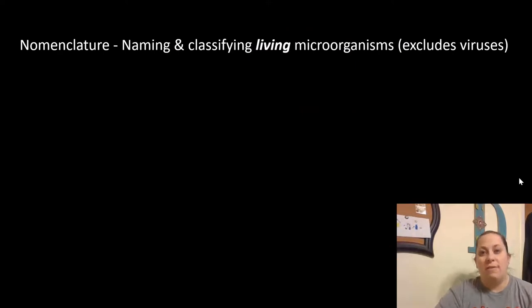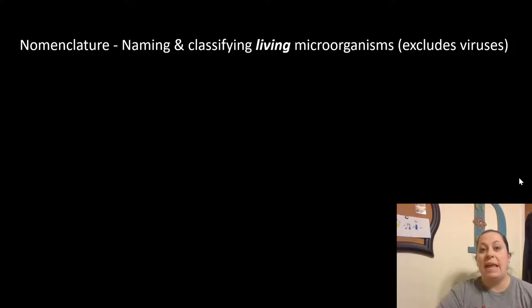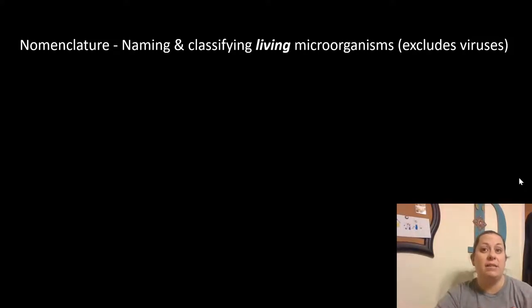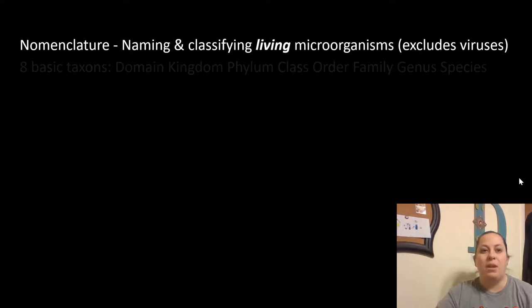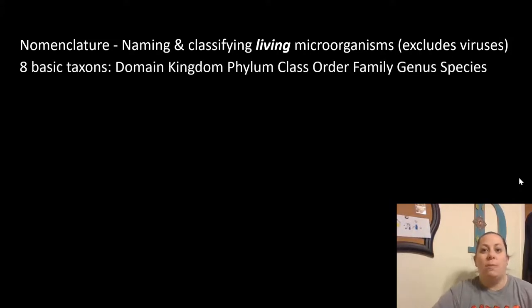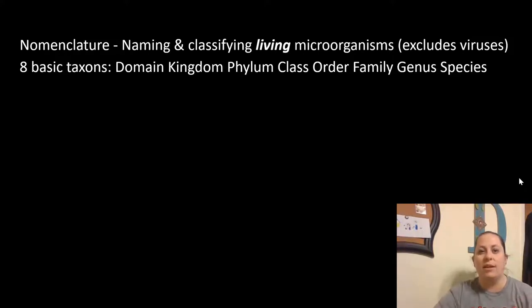How do we name a lot of these microorganisms? This brings us to what we call nomenclature. Nomenclature is the naming and classifying of living microorganisms, so this does exclude viruses because viruses are non-living. When we look at nomenclature, we see that there are eight basic taxons, and if you've taken a general biology course, you have covered these taxons.